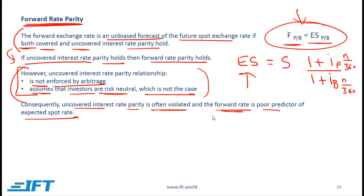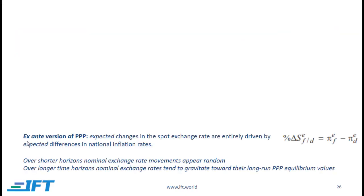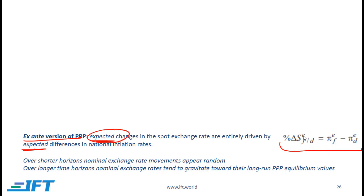From an exam perspective, you need to know what these relationships say. The ex-ante version of PPP says that expected changes in the spot exchange rate are driven entirely by expected differences in national inflation rates. The difference between the relative version and the ex-ante version has to do with actual versus expected values. The expected change in the spot rate is equal to the differential between the expected inflation rates.